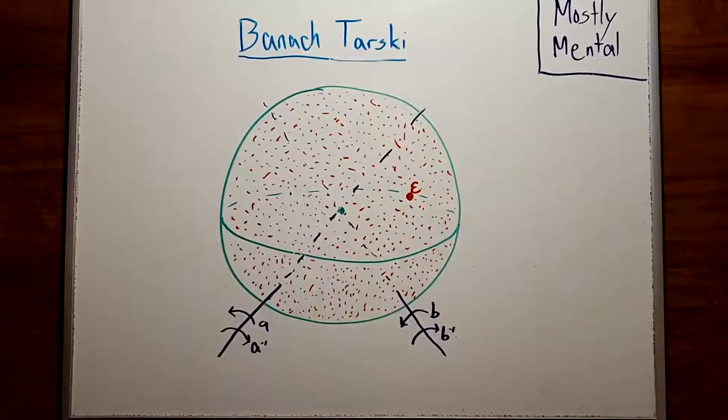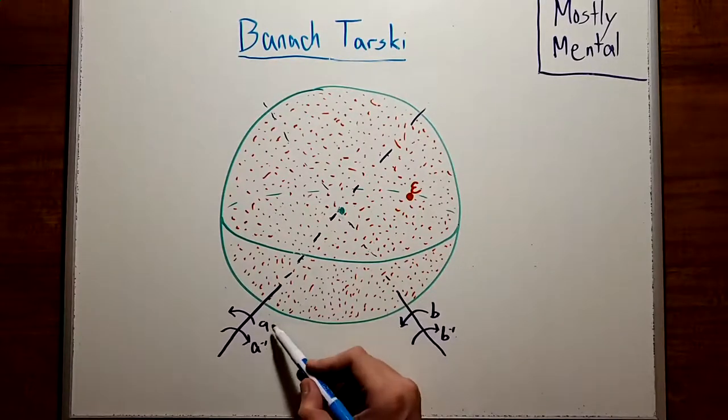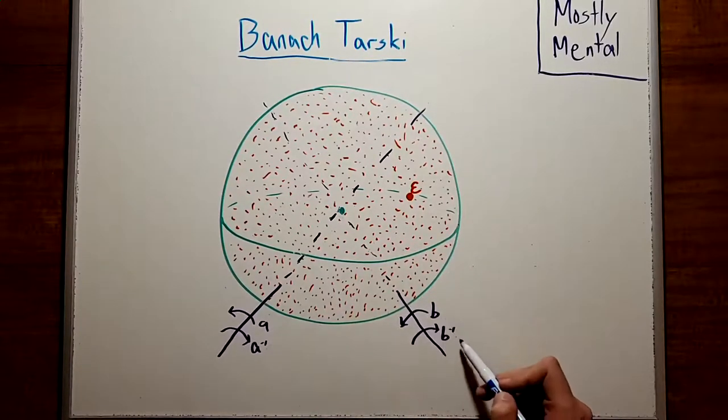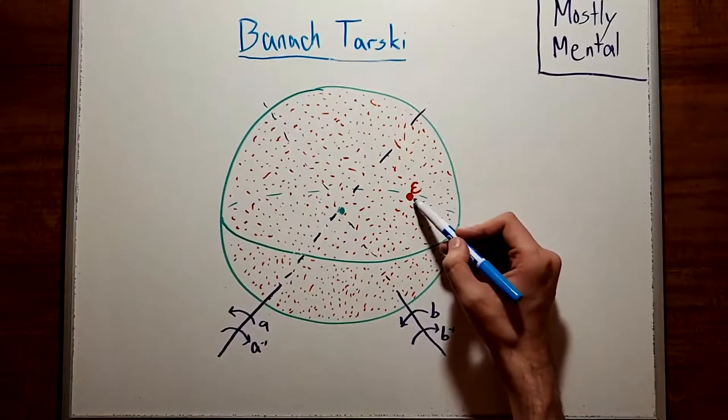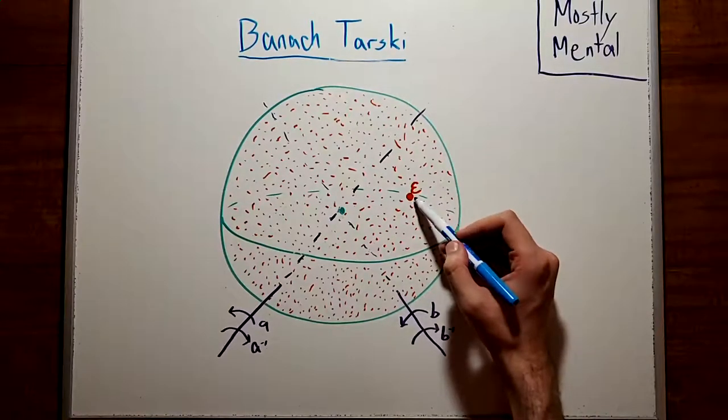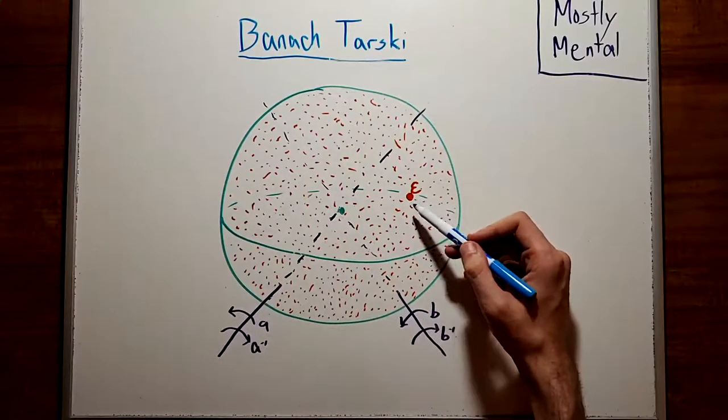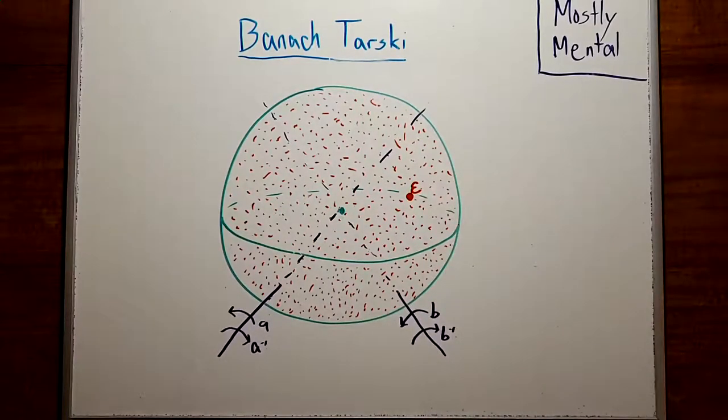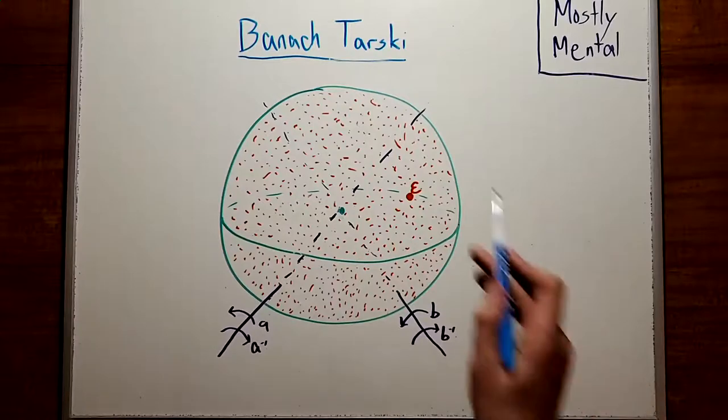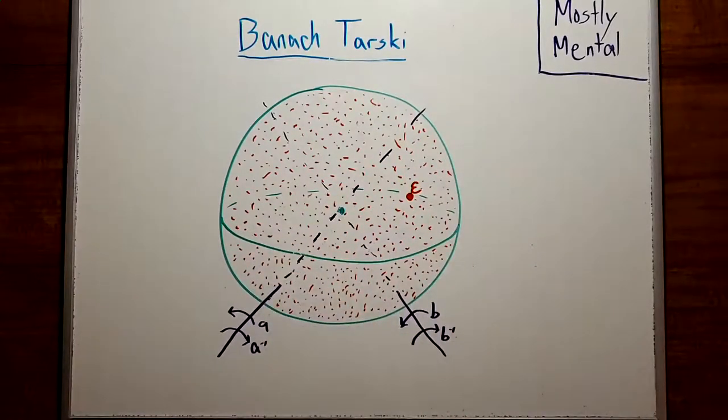That's most of the work done, but there's still one last step we need. We didn't hit every point on the sphere, only the points we could reach with our four rotations, which is known as the orbit of our starting point. And in fact, all of these red points that we hit will have the same orbit, so it's really the orbit of the group. But there's still a lot of points in here that we didn't hit. And in order to fix that, we'll need to look at other orbits.